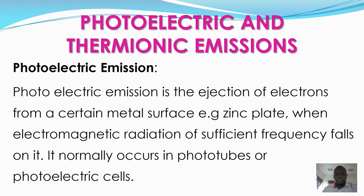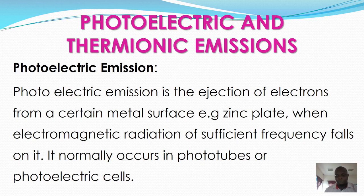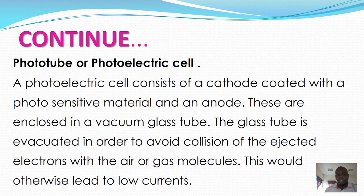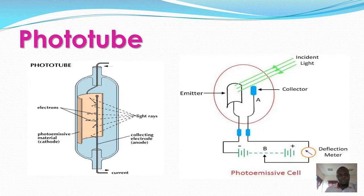Photoelectric emission is a process of ejecting electrons from a certain metal surface — for example, a zinc plate — when electromagnetic radiation of sufficient frequency falls on it. It normally occurs in photo tubes and photo cells. Photo cells consist of a cathode coated with photosensitive material and an anode, enclosed in a vacuum glass tube. The tube is evacuated to avoid collision of ejected electrons with air or gas molecules, which would otherwise lead to low current.